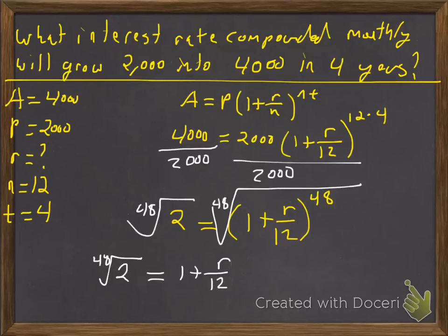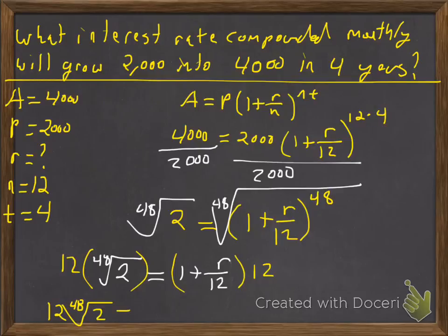Now what I did generically is I subtracted 1 first and then multiplied by the n. It doesn't matter. What I ended up doing here is I multiplied both sides by 12 to clear the fraction first. So we're going to multiply both sides by 12 to clear that fraction. And we have 12 times the 48th root of 2 and then 1 times 12 is 12 and then 12 times the r over 12. The 12s will cancel and you're left with just r.